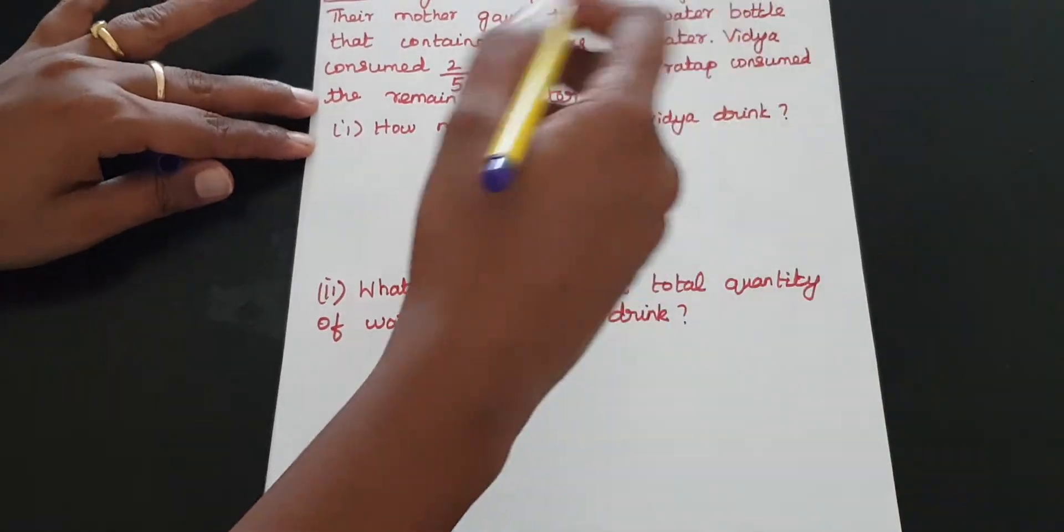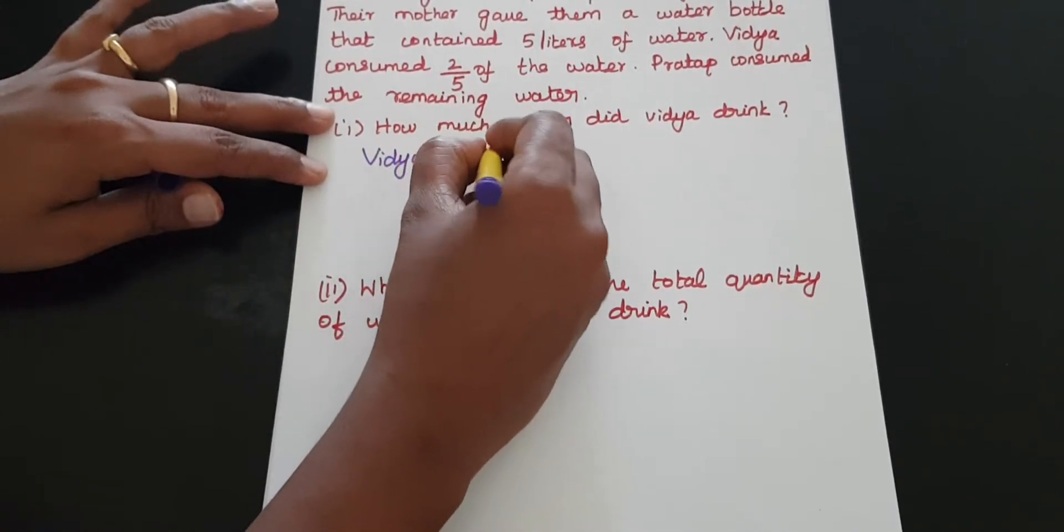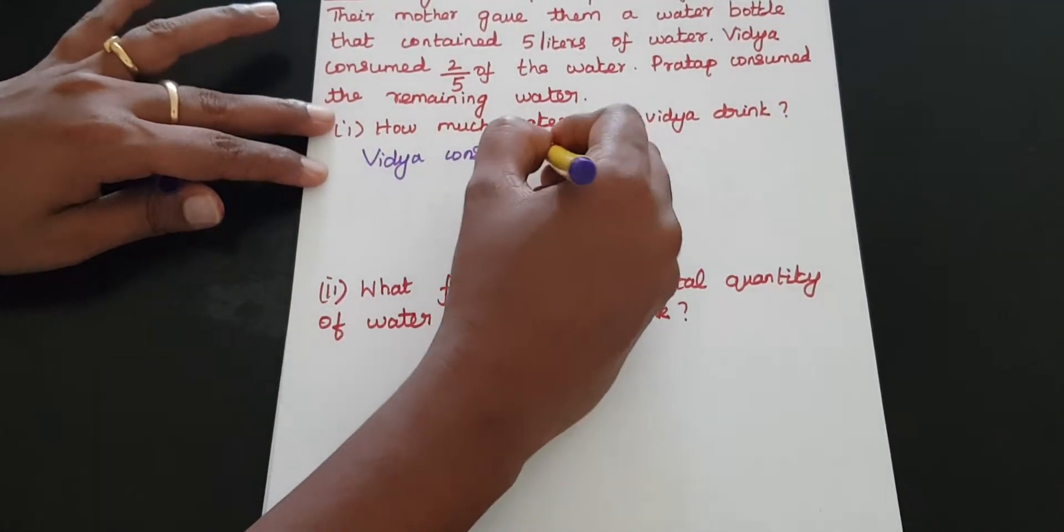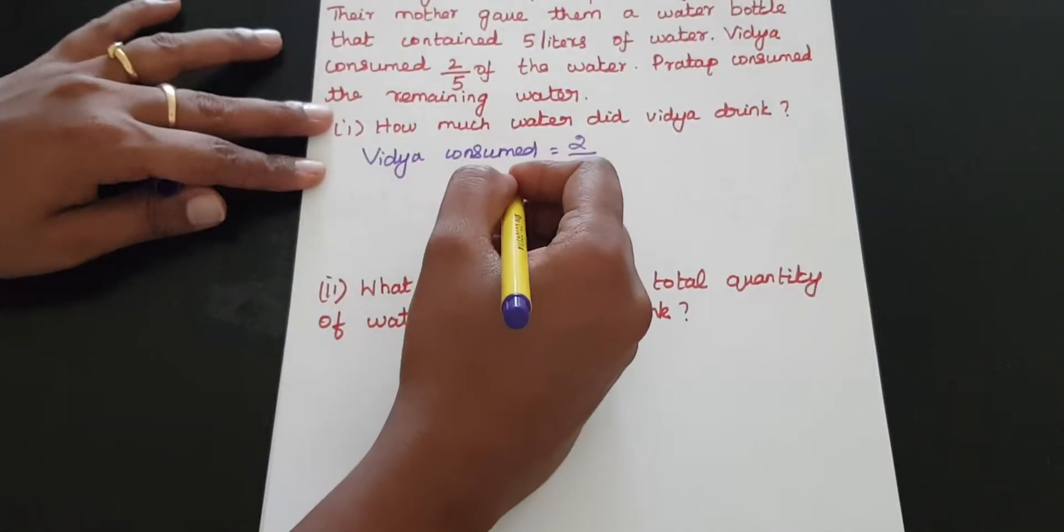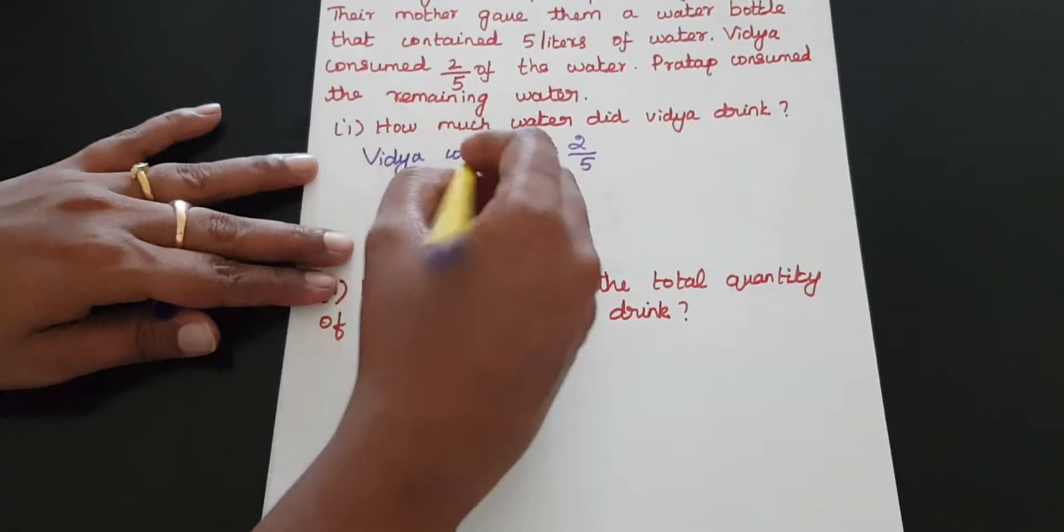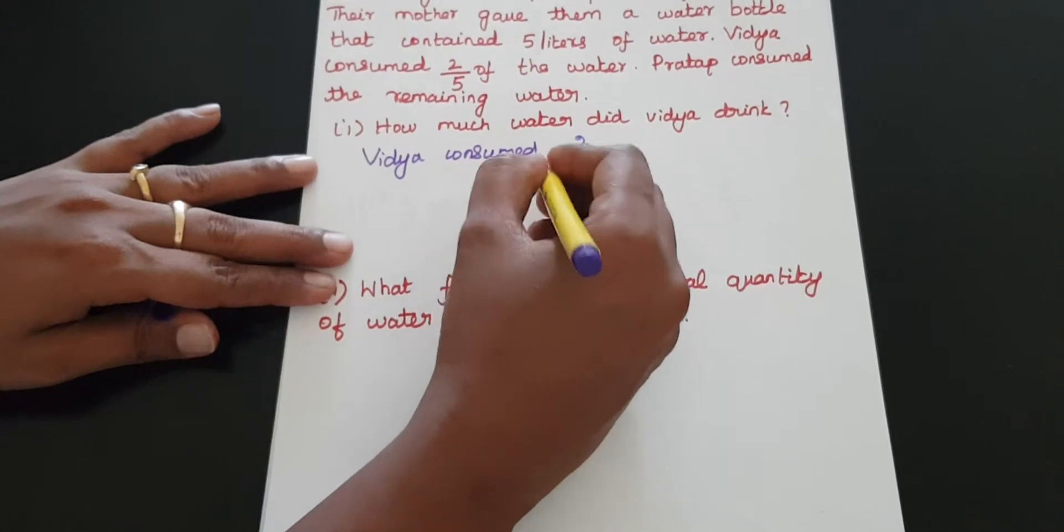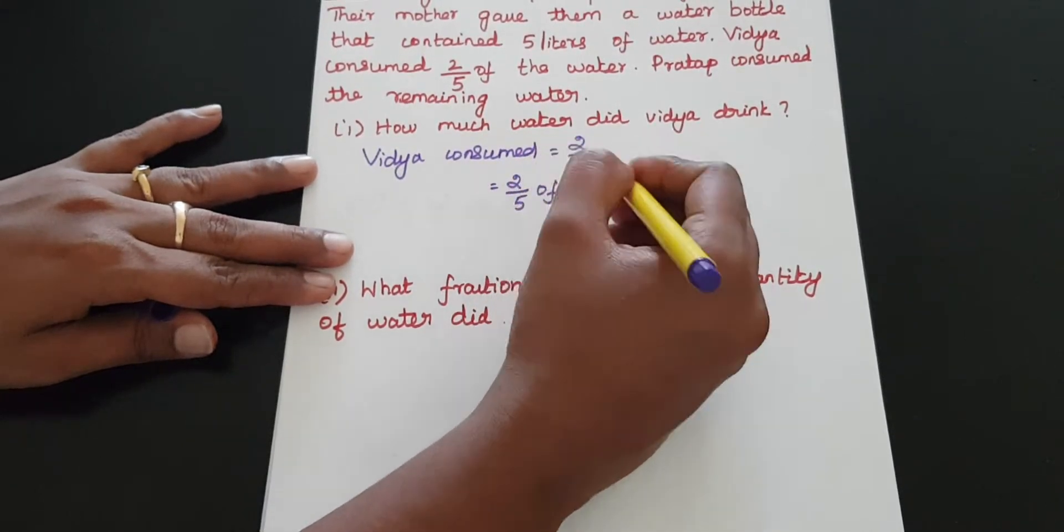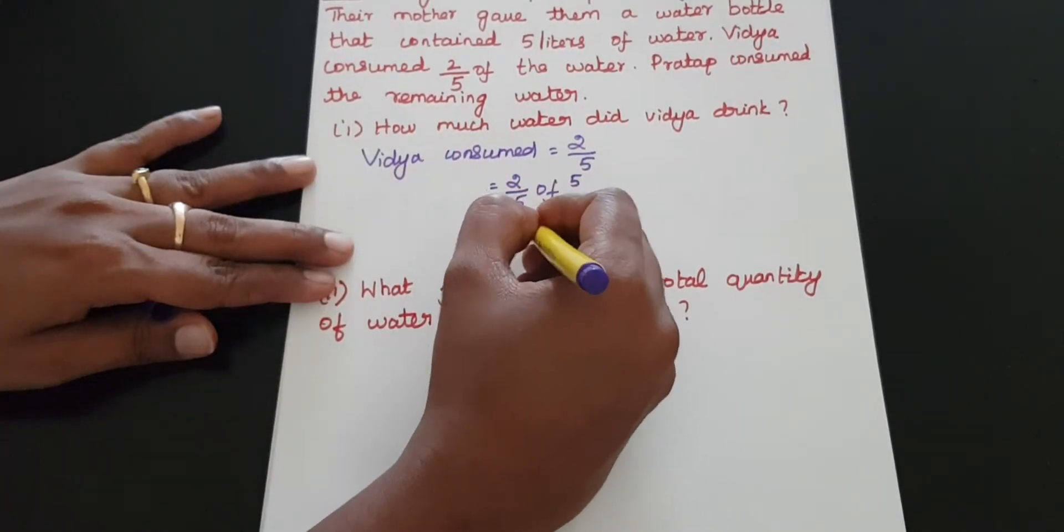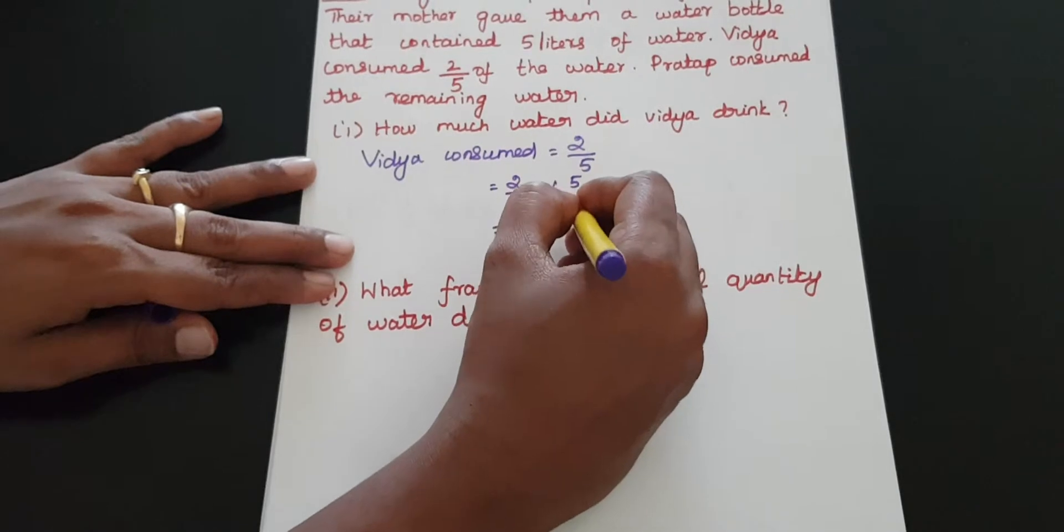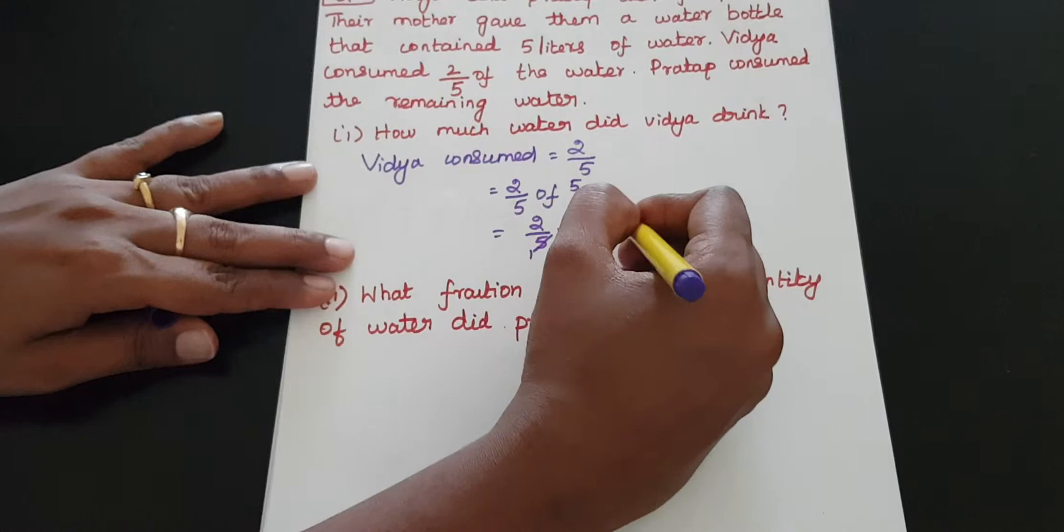is equal to 2 by 5. This is 2 by 5 fraction of the water, but 2 by 5 of 5 litres. 2 by 5 of 5 litres. This is 2 by 5 into 5. 5 and 5 cut to 1, so this is 2 litres.